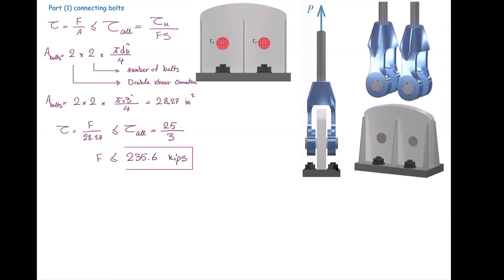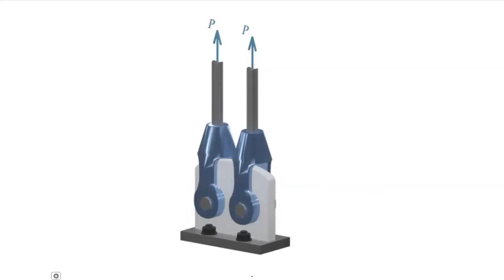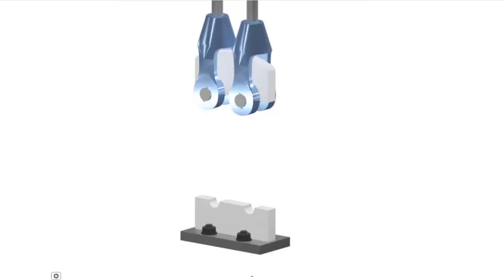Now let's move on to other types of failure. The next part to focus on is the gusset plate — how the force is transferred through it and what kind of failure could happen. For simplicity I'll remove the extra side elements and assume they take no force. If the gusset plate is subjected to an axial force, it will break at its weakest point, which is the cross-section area where the holes are located — the net cross-section area.